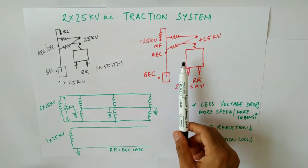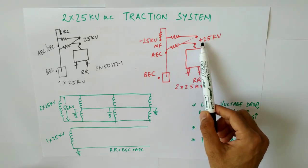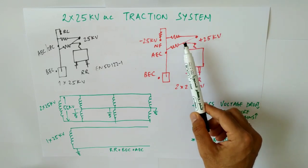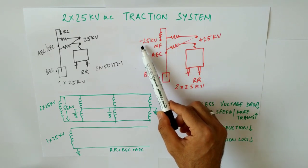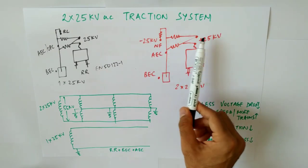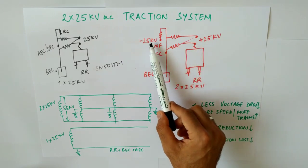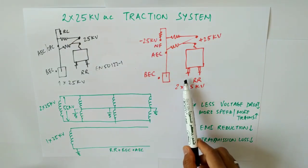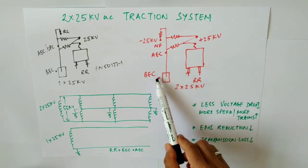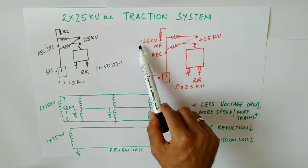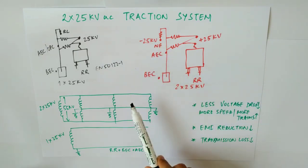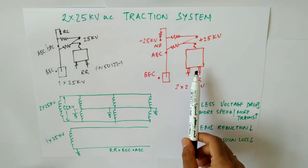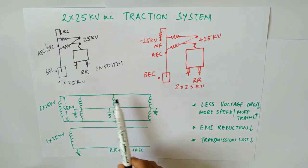In the 2×25 kV system, the contact and catenary system is again at 25 kV — it is not at 50 kV, it's at 25 kV — and then there is another feeder called the negative feeder, which carries minus 25 kV supply. That is why this system is known as 2×25 kV. This negative feeder acts as a return feeder carrying the return current, just like the RC in the 1×25 kV system.